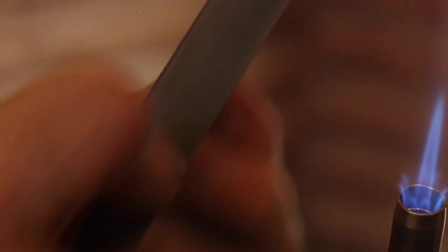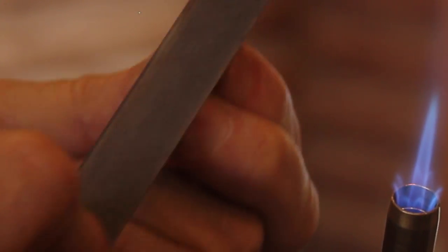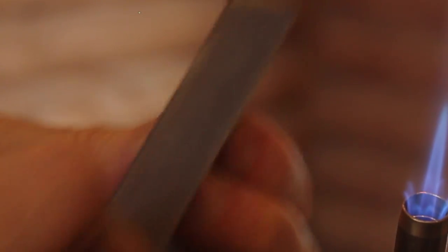Next we're going to take a pair of pliers and clip off that wire. Now we're going to take a file and just take those sharp burrs off of it.